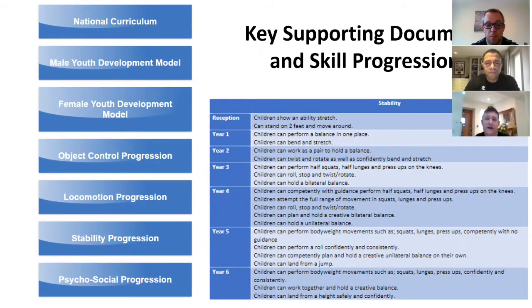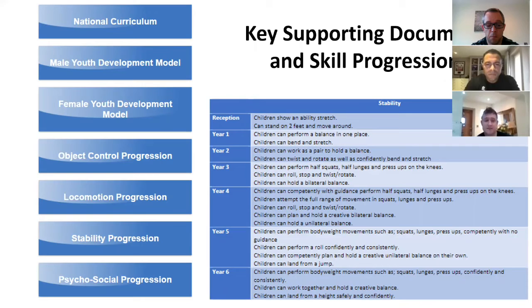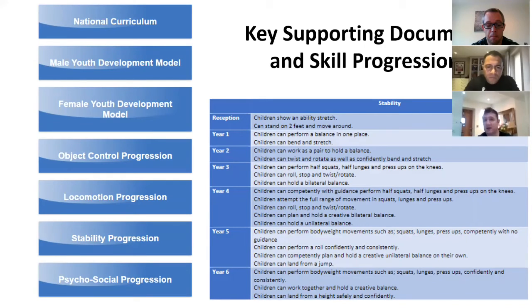There is also a document page where everything AFPE recommends is available. This includes stability progressions from reception right through to Year 6, all printable. We have the national curriculum, the male and female youth development models — including information on maturation and how girls mature early — covering object control, locomotion, and stability. Everything is on one app, no paperwork, and it takes out all the hard work. We understand the pressure on PE leads and know that sometimes PE is pushed to the bottom — we believe it should be at the heart.